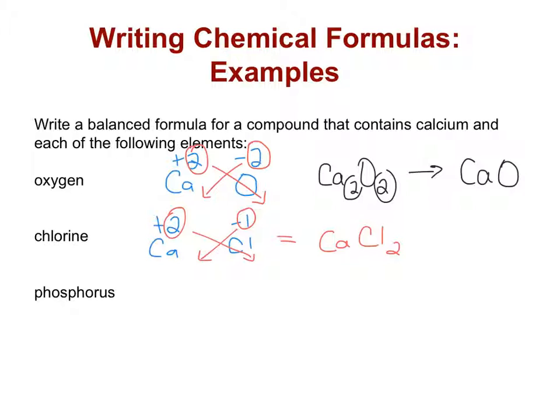Finally, phosphorus, so calcium again plus 2, phosphorus is negative 3. Crisscrossing just the numbers down would give us a formula of Ca3P2 and this one can't be reduced down.